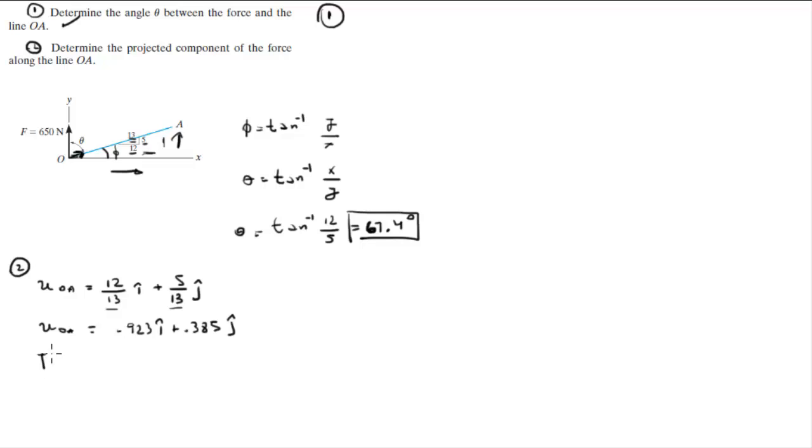And then you got the Cartesian vector form of the force which is 0 in the i because the force is going straight up, plus 650 in the j.